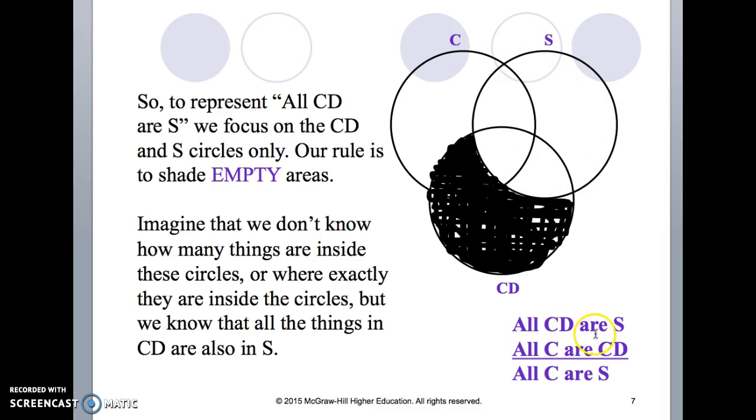Shading in Venn diagrams means empty, there is nothing here. We black it out to suggest that there is nothing. So of the CDs, notice the CDs are all contained in the circle S.